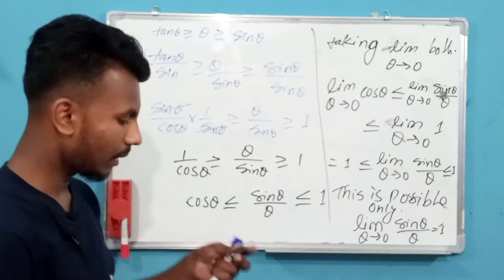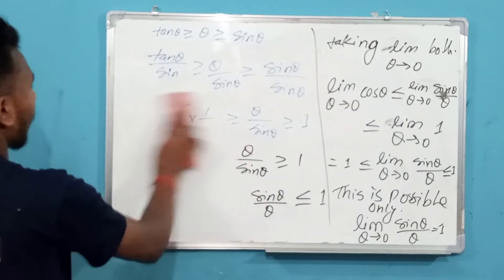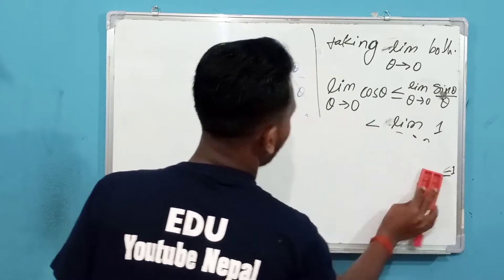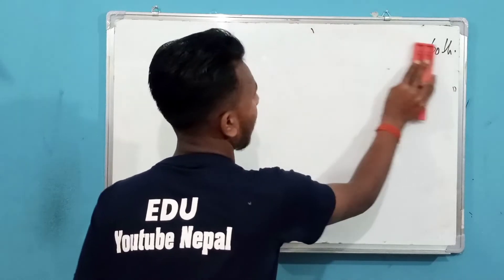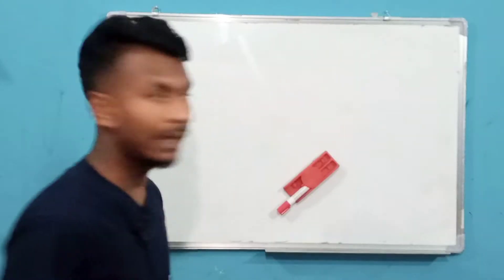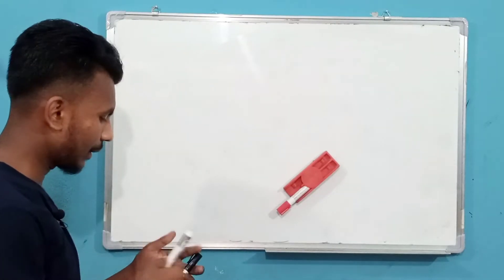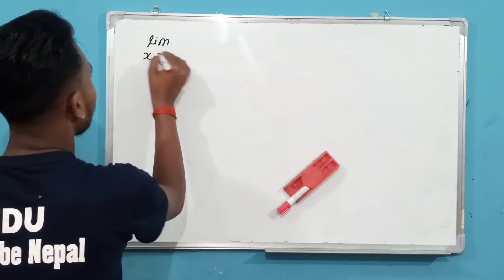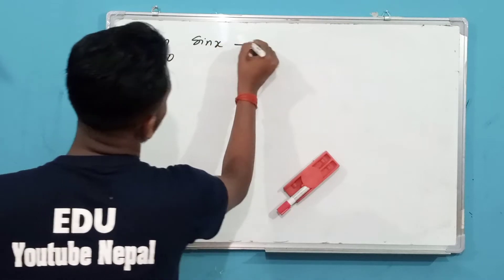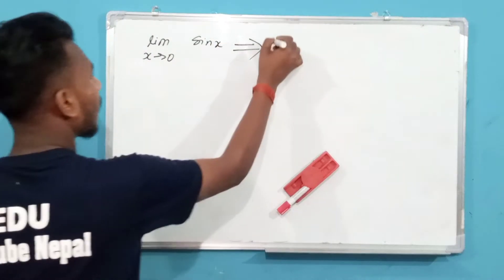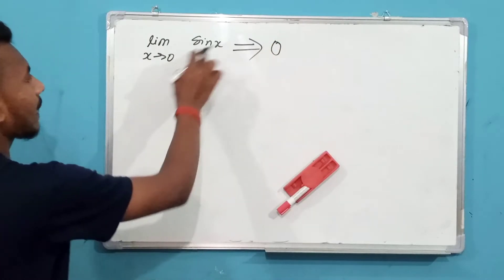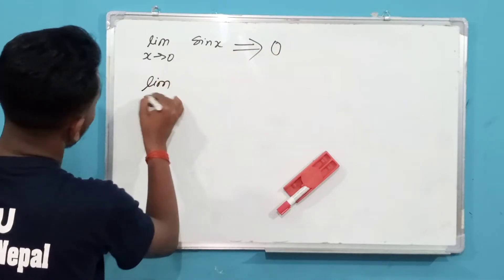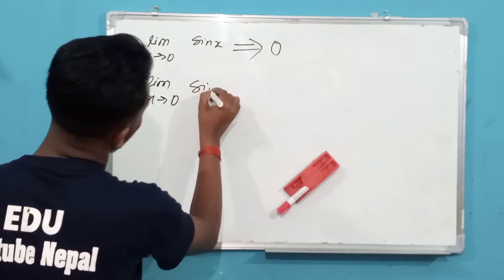This completes the proof. This is the limit of a trigonometric function. The result is: limit as x tends to 0 of sin x divided by x is equal to 1. This is an important formula for trigonometric limits.